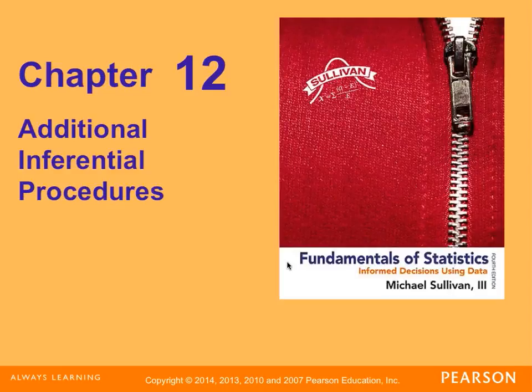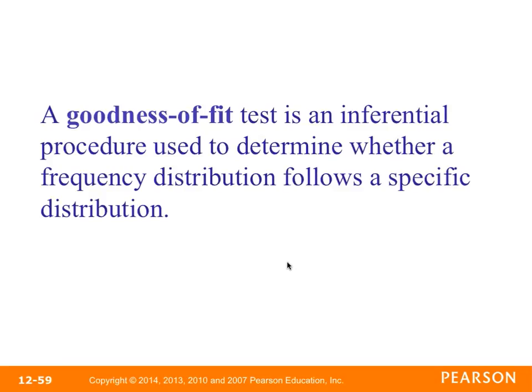Let's take a look at chapter 12, your last chapter, which covers additional inferential procedures. We're going to do a goodness of fit test and a chi-square test for independence. There are also things with expected counts, confidence and prediction intervals for mean and individual responses, and inferences on the least squares regression model in this section — make sure you know how to do those as well.